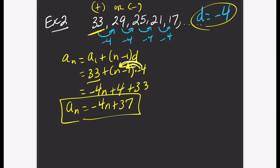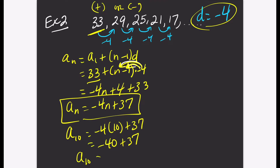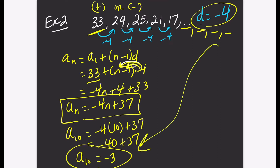If I ask you to find a term in the future, let's say a sub 10, you will plug in 10 for n. Negative 4 times 10 is negative 40, plus 37 gives you negative 3. So the 10th term is negative 3. If you keep this pattern going all the way to the 10th term, you should get negative 3.